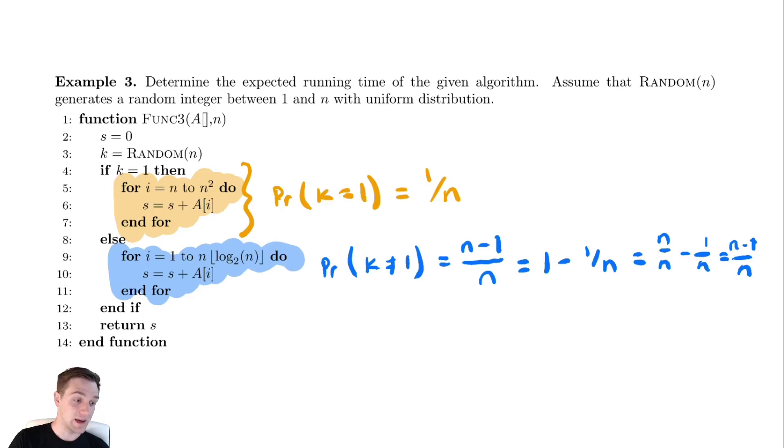Let's find out what is the expected runtime of this code. The expected time, given that k is equal to one, is it's going to be a constant times the top bound minus the bottom bound plus one.